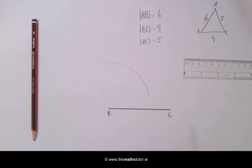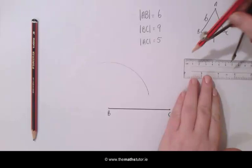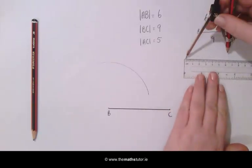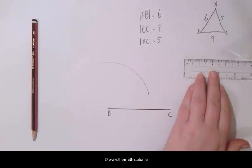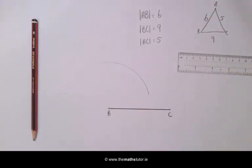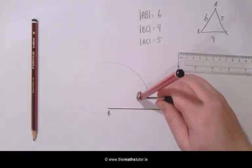Using our ruler again we are going to use our compass to measure the third side which is 5 cm. This time placing our compass at C we are going to draw another arc.